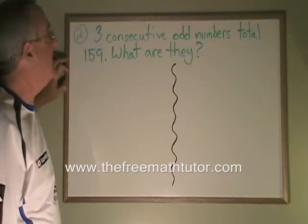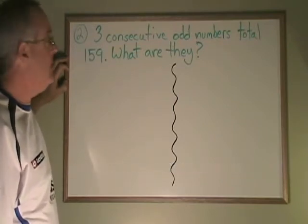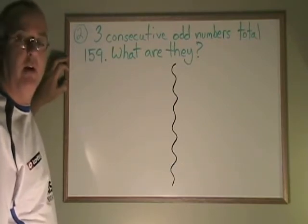In this second example, three consecutive odd numbers total 159. What are they?